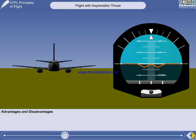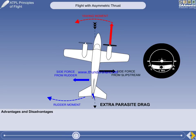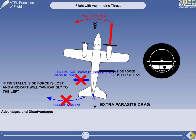The advantage of the wings-level method of balancing the forces is the strong horizontal visual and instrument reference available to the pilot. The disadvantages are that extra parasite drag from the side-slip will reduce climb performance, which would be vital when close to the ground, and that there is a possibility of fin stall if the side-slip angle is excessive, which would worsen directional control problems considerably.